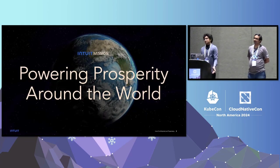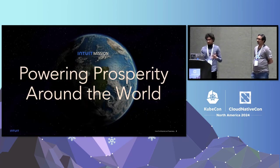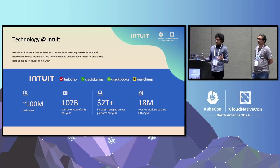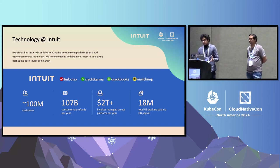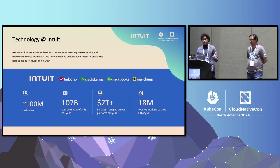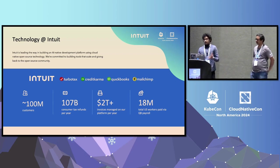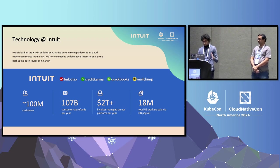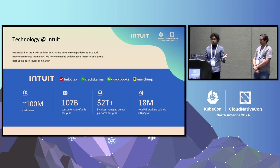At Intuit, our mission is to power prosperity around the world. If you haven't heard of Intuit, we are actually a global fintech company that is building an AI-native development platform. We serve about 100 million customers across our various brands, namely TurboTax, Credit Karma, QuickBooks, and MailChimp. We are really excited to be here, and as big users of open source tools, we love giving back to the open source community.